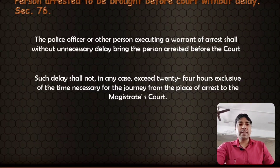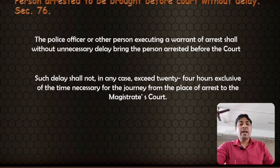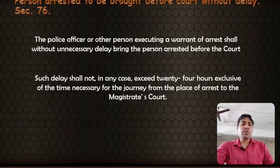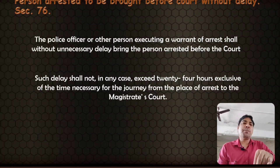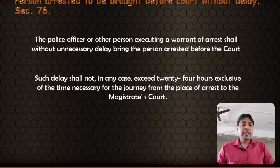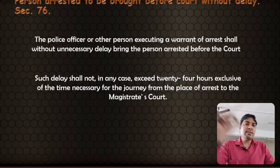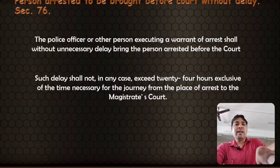For example, if an accused is arrested in Kerala and has to be produced in Maharashtra, the time of the journey will be excluded. After reaching the destination, the 24 hours will be counted from there. The period of journey will be excluded from the time of 24 hours. That is Section 76.